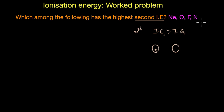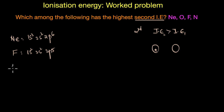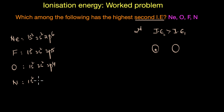To solve this, let's write the electronic configurations of the given atoms. Neon is 1s2 2s2 2p6, fluorine is 1s2 2s2 2p5, oxygen is 1s2 2s2 2p4, and nitrogen is 1s2 2s2 2p3.